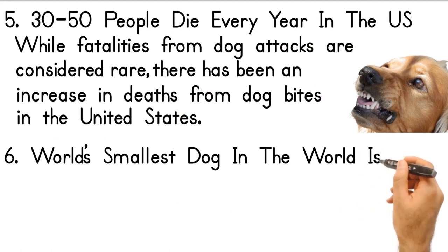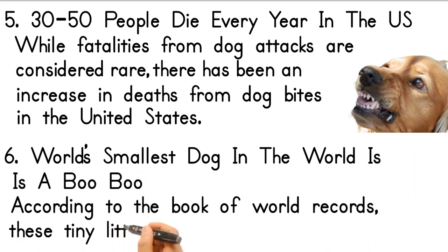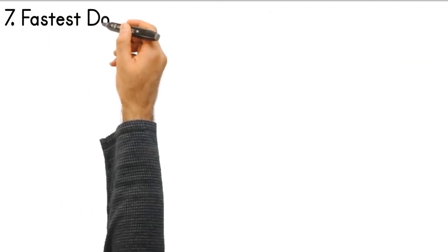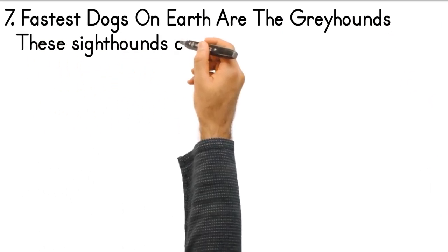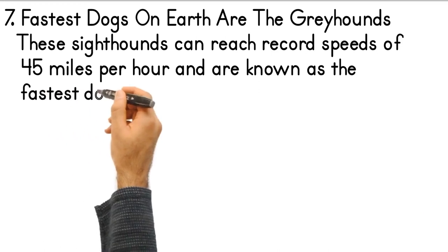6. World's Smallest Dog in the World is a Boo Boo. According to the Book of World Records, these tiny little dogs have a height of 9.65 centimeters. 7. Fastest Dogs on Earth are the Greyhounds. These sighthounds can reach record speeds of 45 miles per hour and are known as the fastest dogs for short distances.